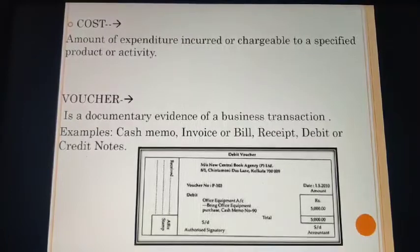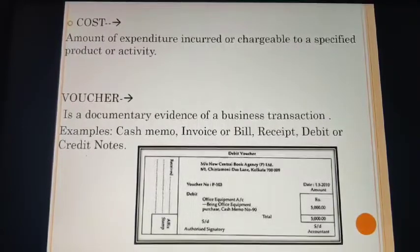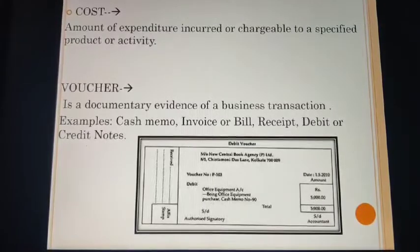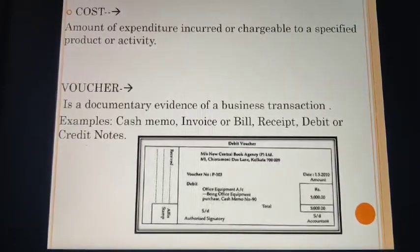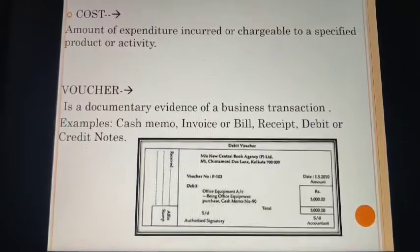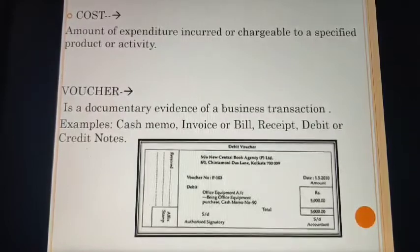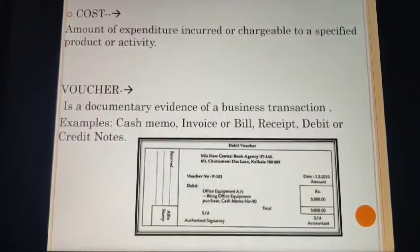Moving on to the next term: cost. Cost is the amount of expenditure incurred or chargeable to a specified product or activity. It is a very easy term — any product cost, any activity cost, that is the amount of expenditure which has been incurred or which is chargeable to that product or activity.